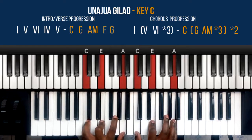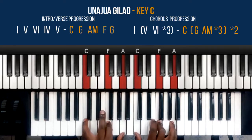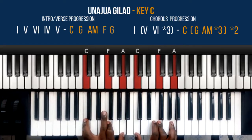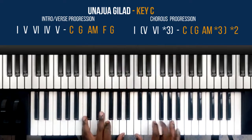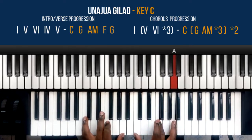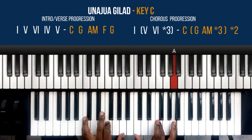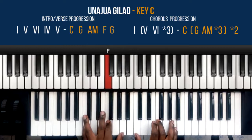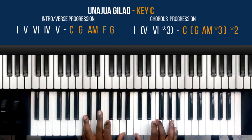So that's A minor. Then F chord, second inversion of the F. Right hand: C with my thumb, F with my middle finger, and note A with my small finger. Left hand: small finger playing note C, pointer finger note F, and note A with my thumb.